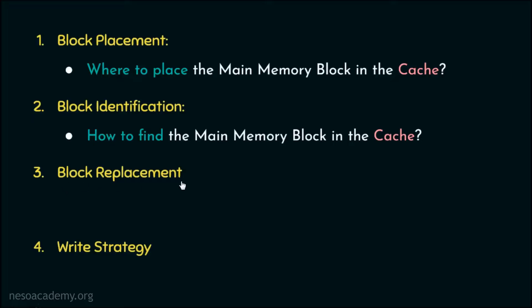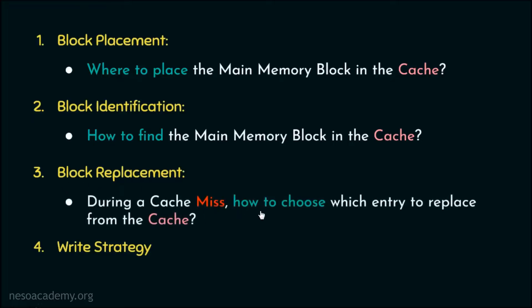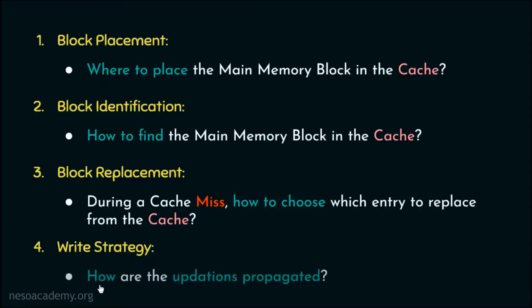Next up is block replacement — during a cache miss, how to choose which entry to replace from the cache, replacing it with the newly requested block. The last is write strategy, which answers how updates are propagated from the cache to the main memory. In today's discussion, we will brush up block placement and block identification, and then talk about block replacement and write strategies.